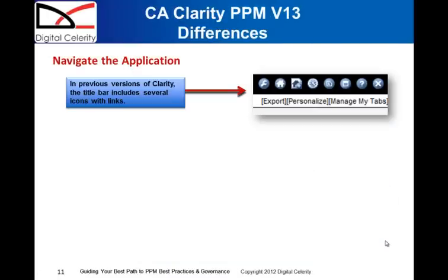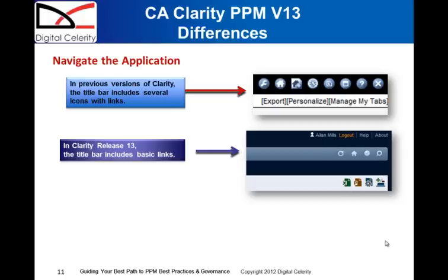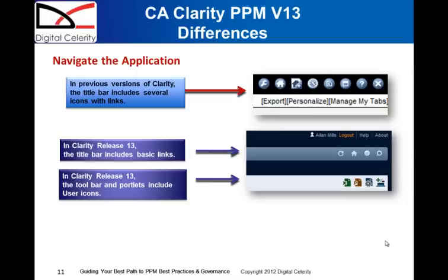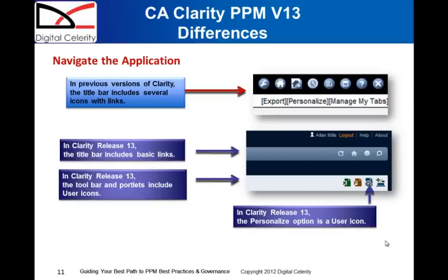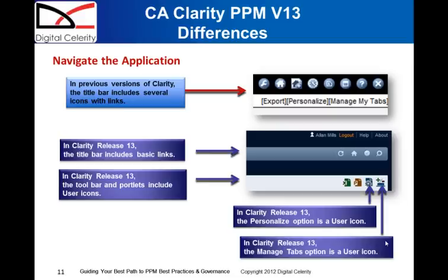In previous versions of Clarity, the title bar included several icons with links. In Clarity version 13, the title bar includes basic links and icons. At the top of the page there's a logout link, a help link, and an about link. On the toolbar, there are icons for refreshing the page, for the home page, for your current timesheet, and for searching. The portlet itself has a toolbar that includes icons for exporting to Excel, exporting to PowerPoint, an icon to personalize your options, and an icon to manage the tabs on that specific page.